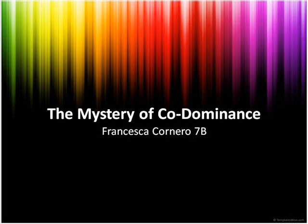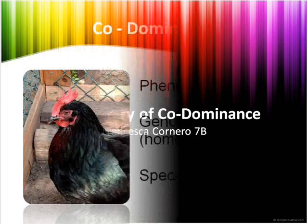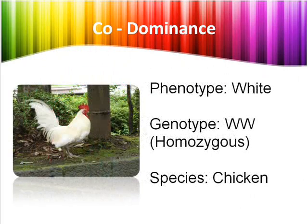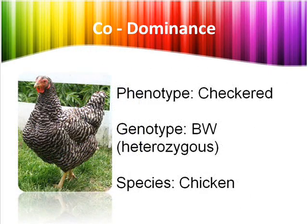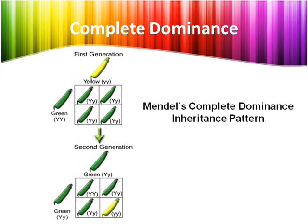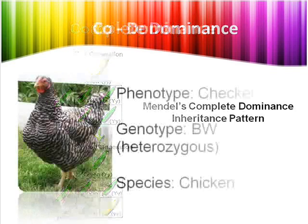How do we inherit our genes? How come that if the dominant gene of a species is black and the recessive is white, an offspring can be checkered? These situations cannot be explained by simple, complete dominance inheritance alone. Through the basics of co-dominance, you will understand this part of genetics.